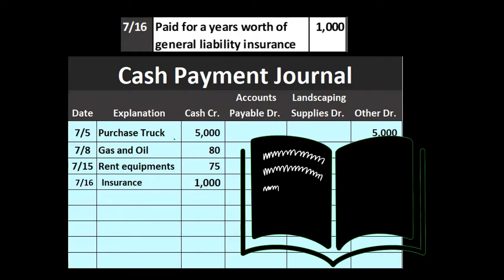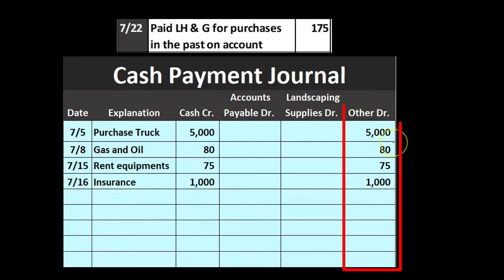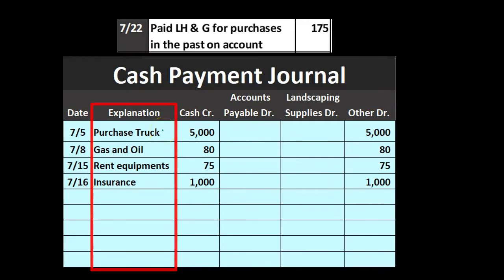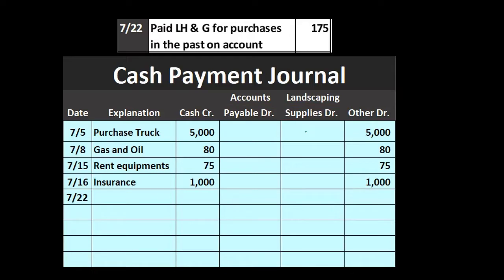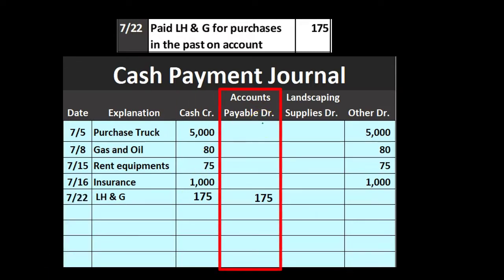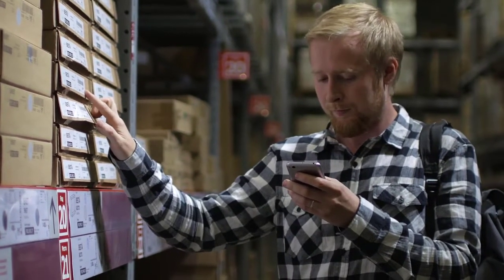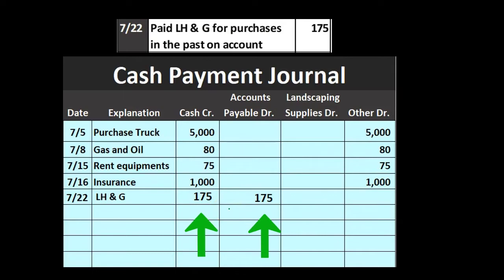On 7/22, paid LH&G for purchases on account, $175. Cash goes down by $175, and the other side goes to accounts payable. This is one of the more common transaction types — accounts payable goes down when we make payments. For businesses that frequently purchase on account and then make payments, there would be many of these transactions: cash going down with accounts payable as the other side.